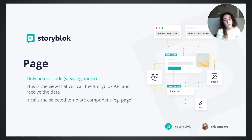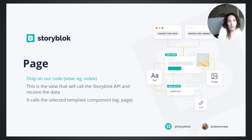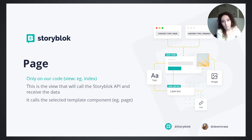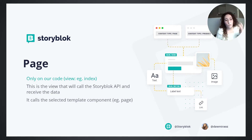Then we have the page. The page is simply where we call the API from Storyblok, get the data, and send it to the template. The template sends the data to the organisms, the organisms send the data to the molecules, and the molecules send it to the atoms — step by step, from parent to child.